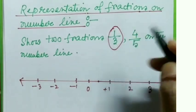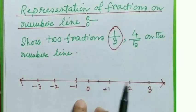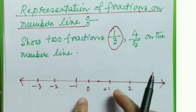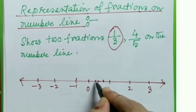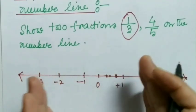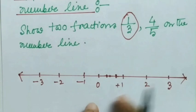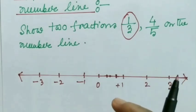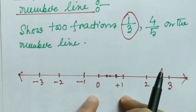Now I'm going to plot 1 by 3 on this number line. In order to show 1/3 on this number line, I will have to divide the gap between 0 and 1 into 3 equal parts. Now let me do: 1, 2, 3 — this is 1 part, this is 2 parts, this is 3 parts. Why have I taken these 3 parts between 0 and 1? Why not between 0 and 3? Because 1/3 is greater than 0 and less than 1, so we have to put it in between 0 and 1.